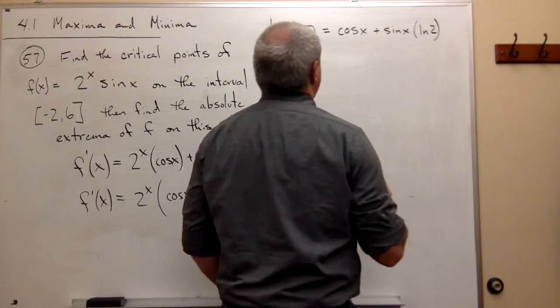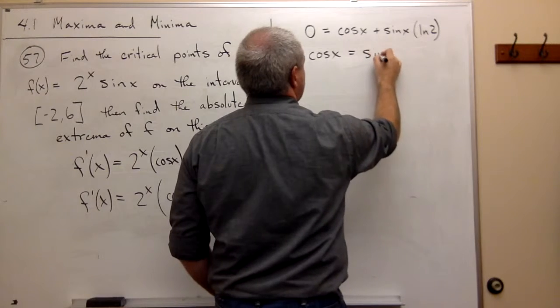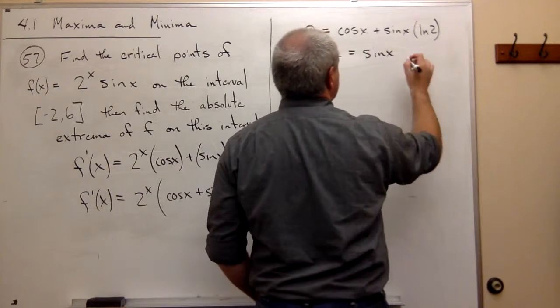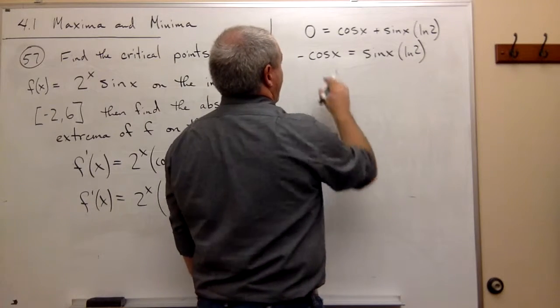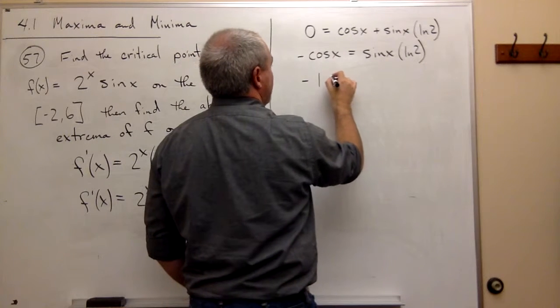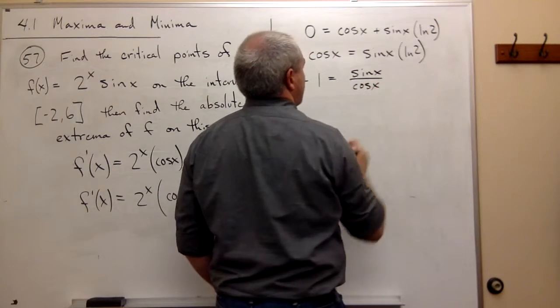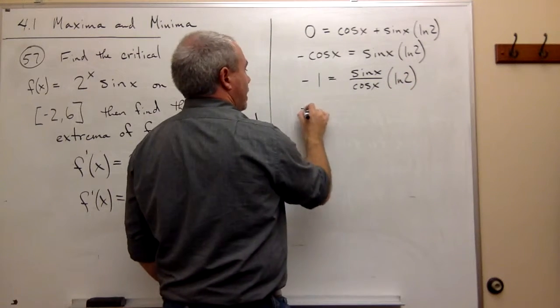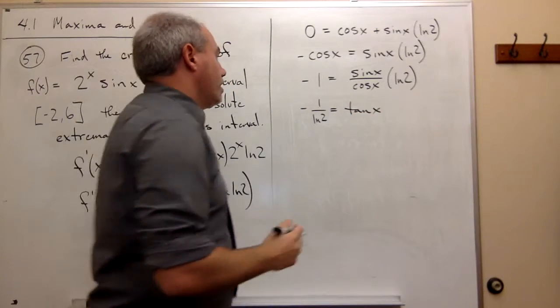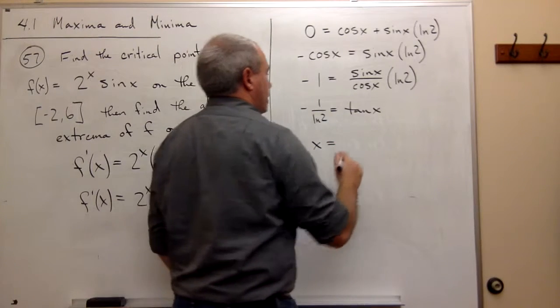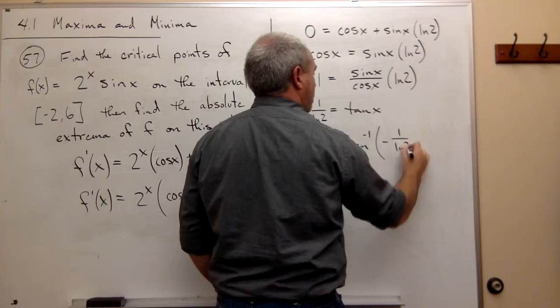So what we have here is that negative cosine of x is equal to sine x times ln of 2. Then I could divide both sides by cosine, and I get that minus 1 is equal to sine x over cosine x times ln of 2. In other words, negative 1 over ln of 2 is equal to tangent of x. And x would have to be equal to tan inverse of negative 1 over ln of 2.